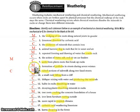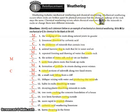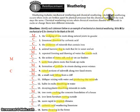Anything that has to do with a change of chemical makeup is chemical weathering, and anything to do with physical change is mechanical weathering. Take a look at your books, make sure you look over your notes, and this shouldn't be too hard.